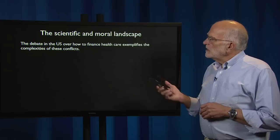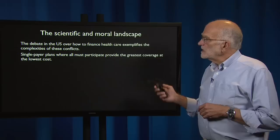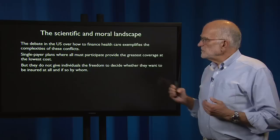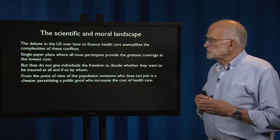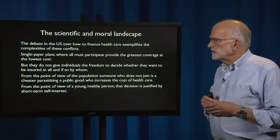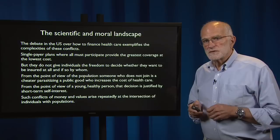The probably best way to introduce this is the debate in the United States over how to finance health care — it exemplifies the complexities of these conflicts. A single-payer plan where all must participate provides the greatest coverage at the lowest cost to the society as a whole. But such plans do not give individuals the freedom to decide whether they want to be insured at all, and if so, by whom. From the point of view of the population, someone who does not join is a cheater parasitizing a public good who is increasing the cost of health care. From the point of view of a young healthy person, that decision is justified by short-term self-interest. Such conflicts of money and values arise repeatedly at the intersection of individuals and populations.